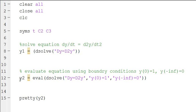So to do that, we can do this in terms of y2. If we're going to evaluate using boundary conditions, y of 0, so T equals 0, we have y(0) equals 1, and y of negative infinity equals 0. We can do y2 is equal to eval, this eval function, parentheses, dsolve, parentheses.